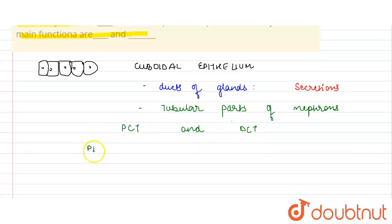What does PCT stand for? It stands for the proximal convoluted tubule. The second part is the distal convoluted tubules.